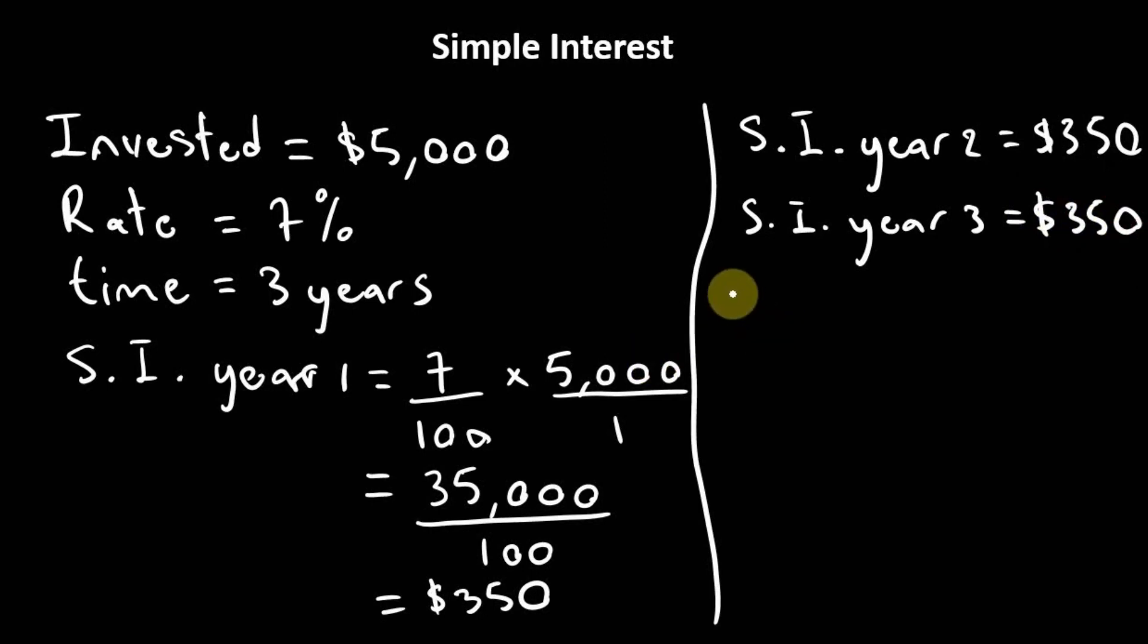So therefore, in order to obtain the amount of interest that we'll get after the three years, we can simply add the interest that would have gotten in year one to the interest that would have obtained in year two, along with the interest that would have gotten in year three as well. So that requires us to add 350 three times, which is the same thing as multiplying three times 350.